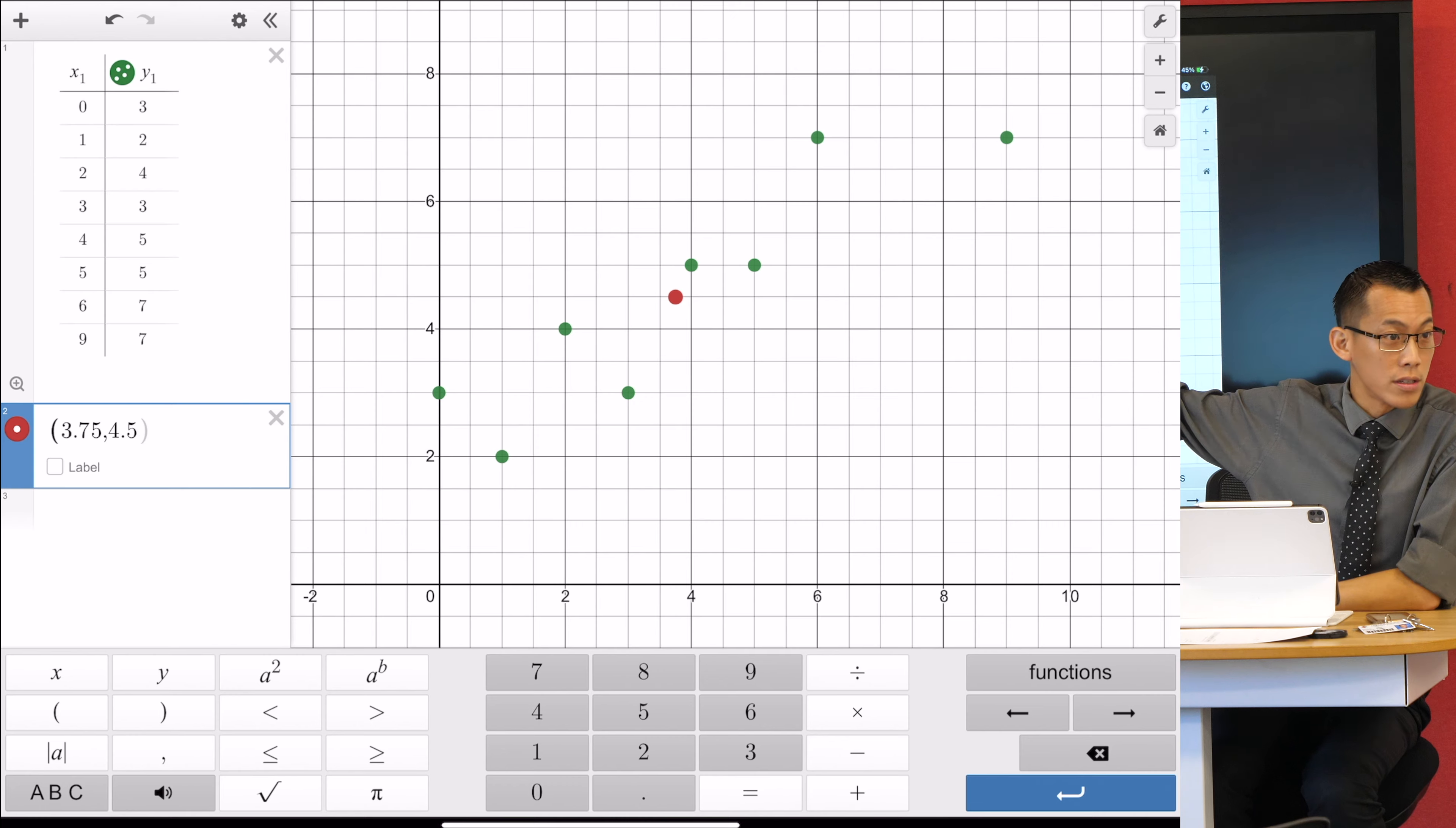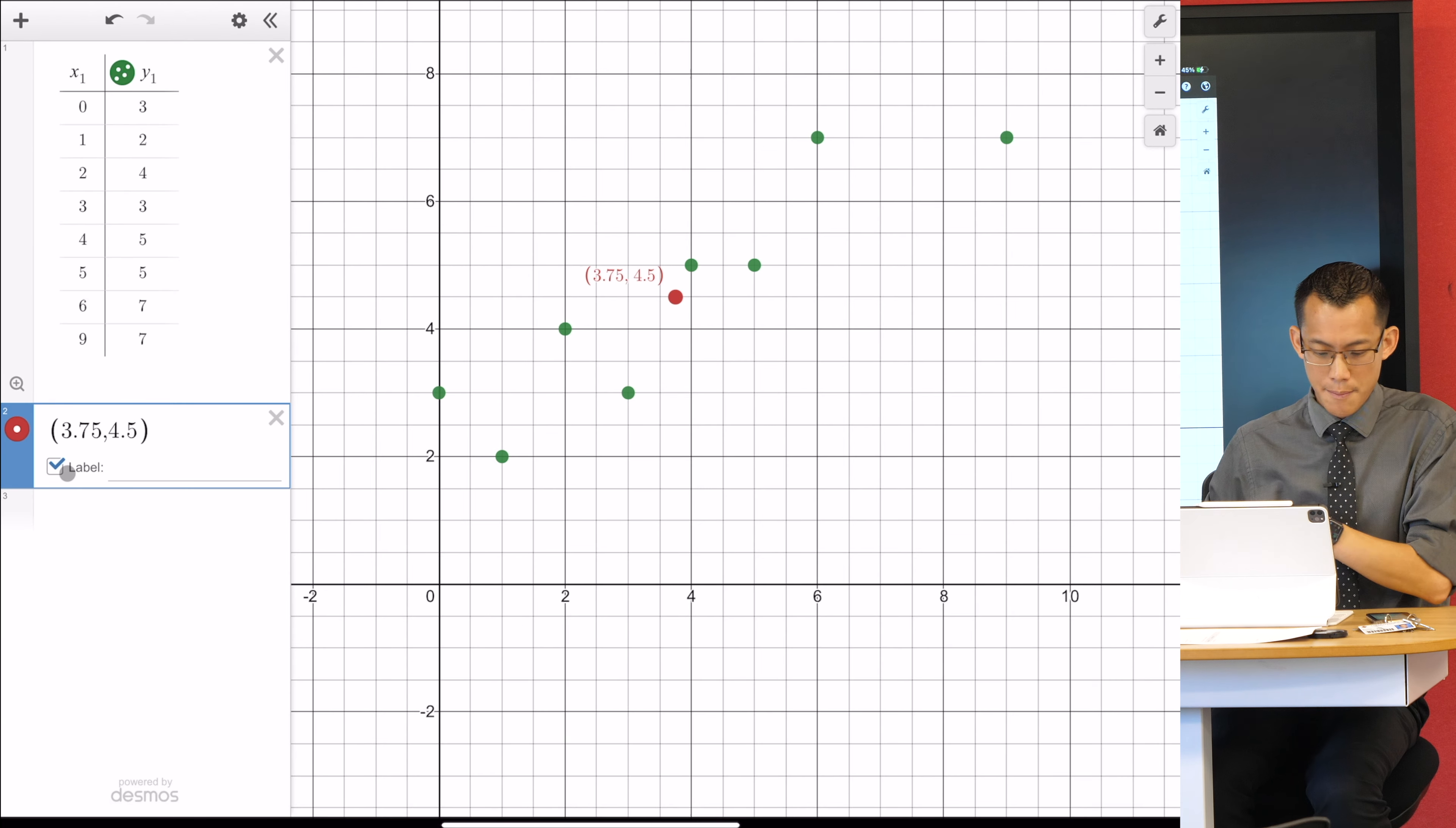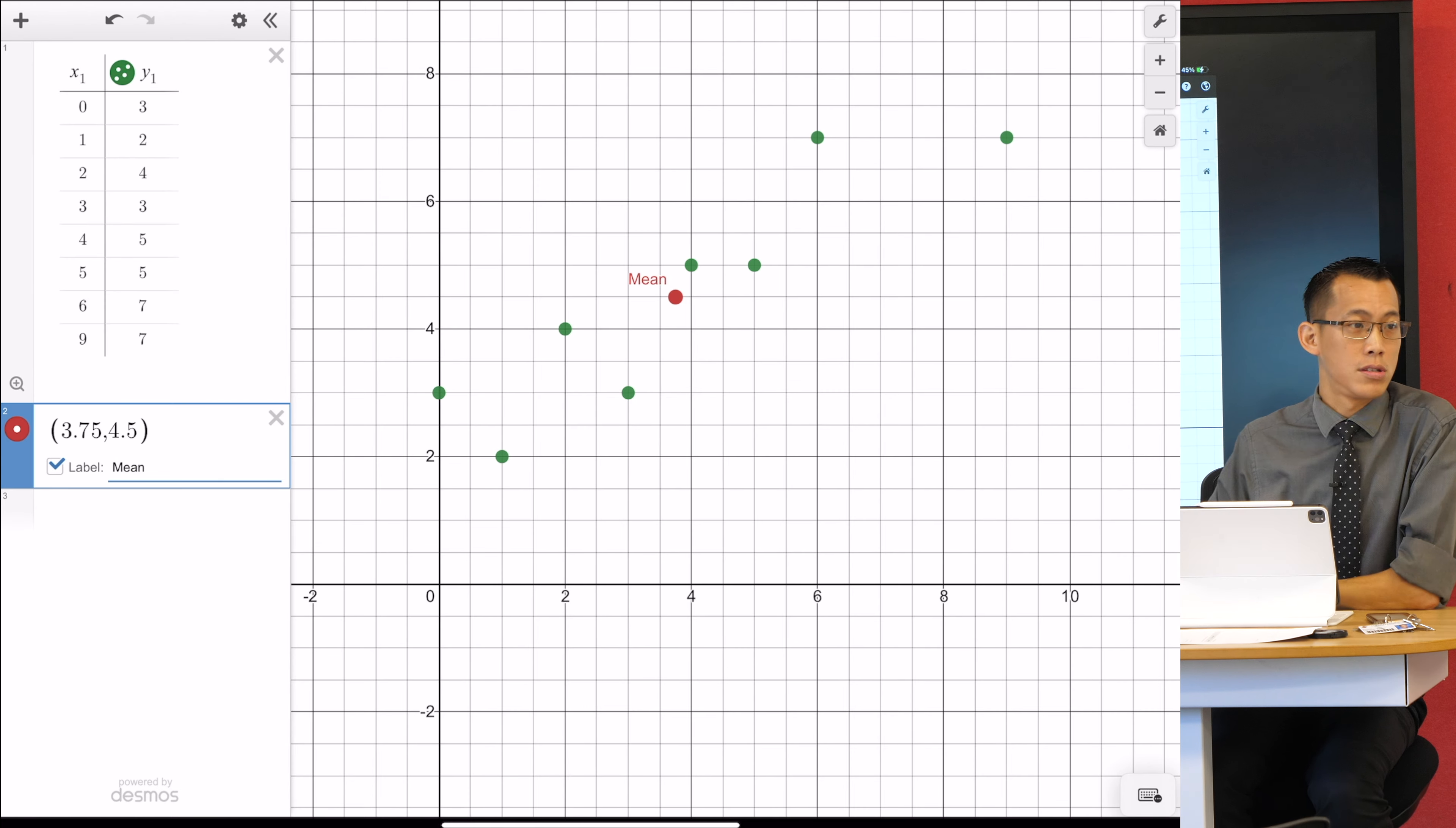Now, if you just go ahead and type in coordinates, just like you normally would, they will give you a point. And just because it's probably given you a different color because Desmos will just cycle through the colors, but just to make it really obvious, let's call this the mean. So just tick the label box and it's there as mean. It's not an actual data point. So go ahead and put this on.